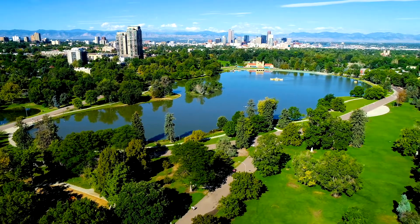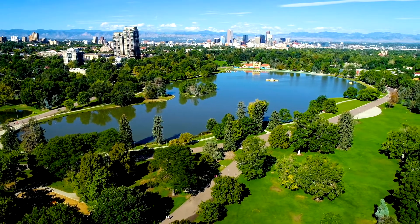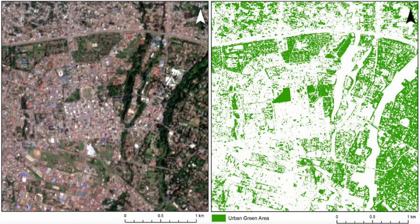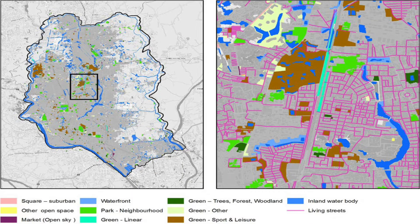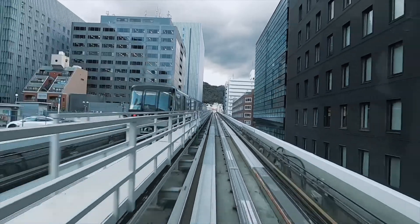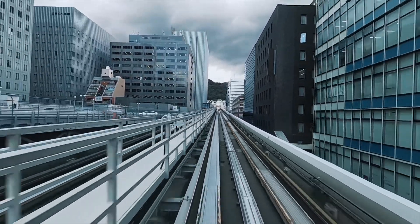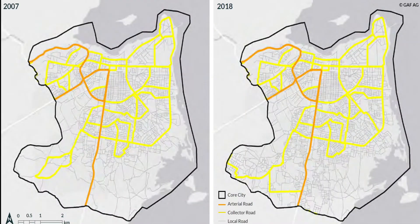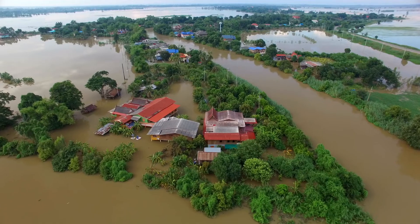Secondly, ensuring liveability and public health requires availability of green spaces and utilising nature-based solutions such as wetland areas. Thirdly, sustainable urban transport requires monitoring population flows and mapping of existing and planned infrastructure.